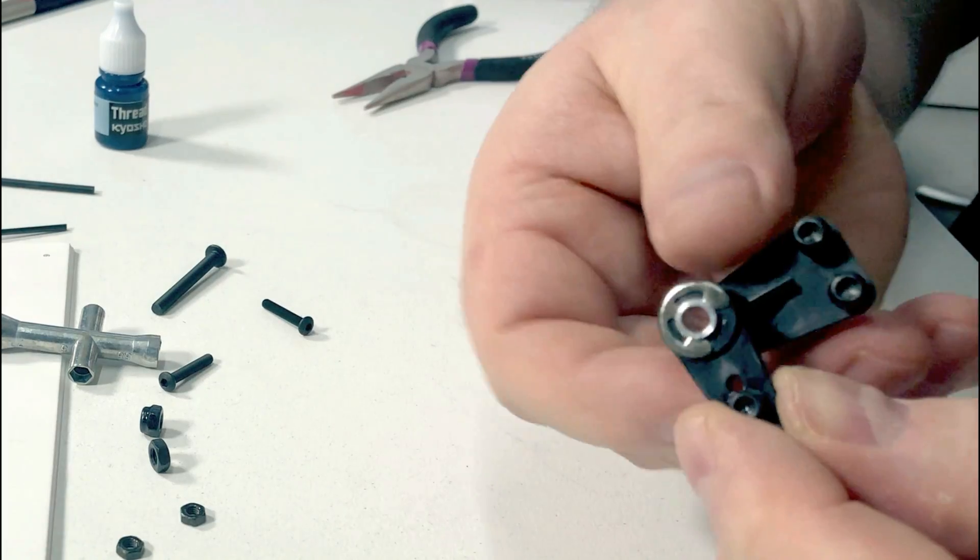Alright, time to put the rear arms on now. Now with these little mounts the holes that go through them are angled, so it goes down in this direction. So I just do them up, not tight, just so I can still move them. I don't do them up real tight, just so I can push that rod through. And later on after I put the arms on I'll tighten them up.